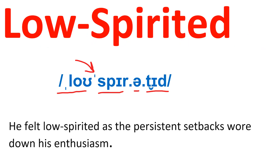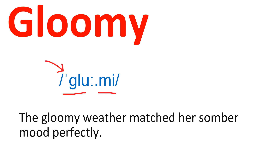Low-spirited. It's a four-syllable word; all the syllables are underlined in the phonemic script and the stress is on the second syllable — 'low-spirited.' Example sentence: He felt low-spirited as the persistent setbacks wore down his enthusiasm. Gloomy. It's a two-syllable word and the stress is on the first syllable. Example sentence: The gloomy weather matched her somber mood perfectly. What does 'somber' mean? Check it out in the dictionary and let me know in the comment section.